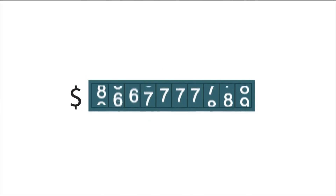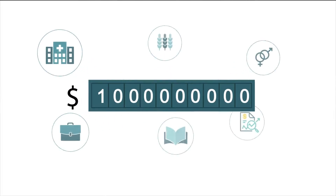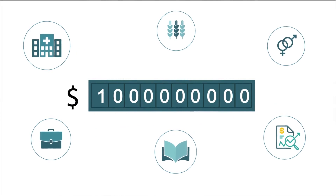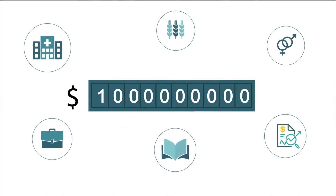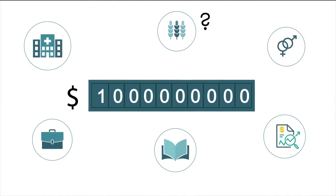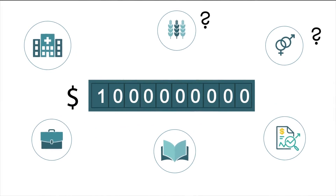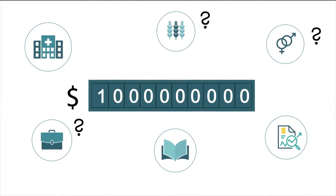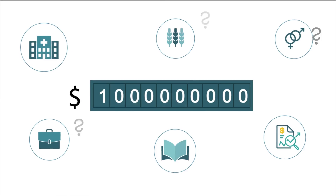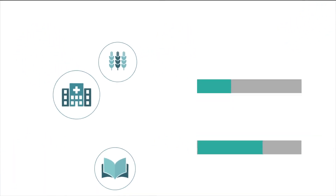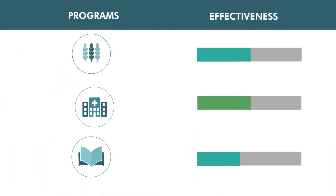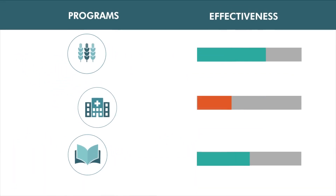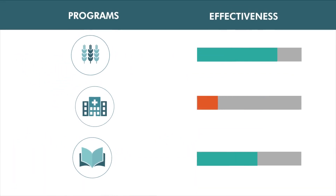Billions of dollars are spent every year in the fight against poverty. Despite good intentions, many policies and programs are untested. How do we know which approaches are most effective and which approaches may not be effective at all?